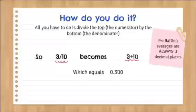So 3 out of 10 becomes 3 divided by 10, and that equals 0.300. Batting averages are always 3 decimal places, even if 2 of those are just 0s.